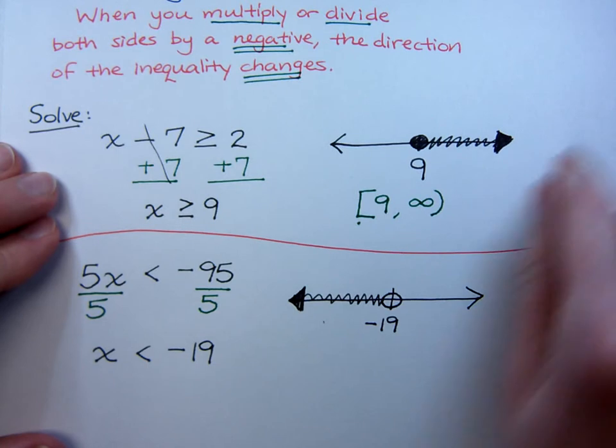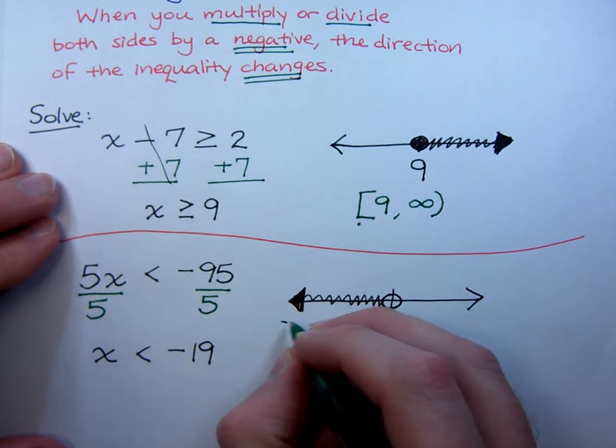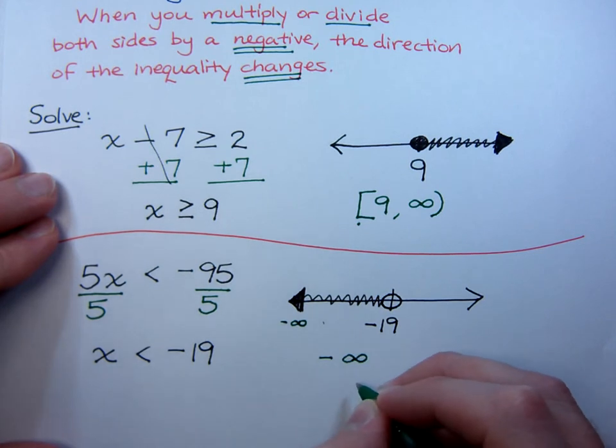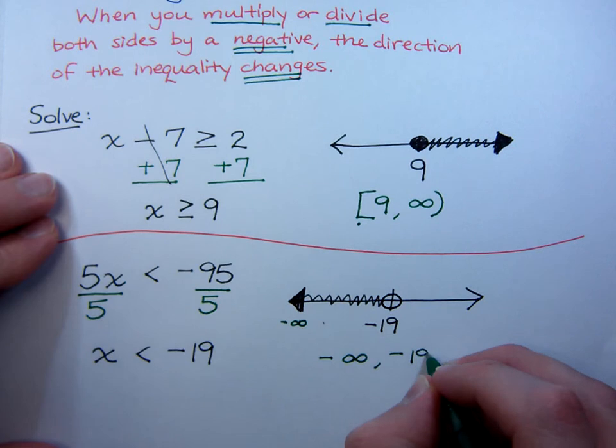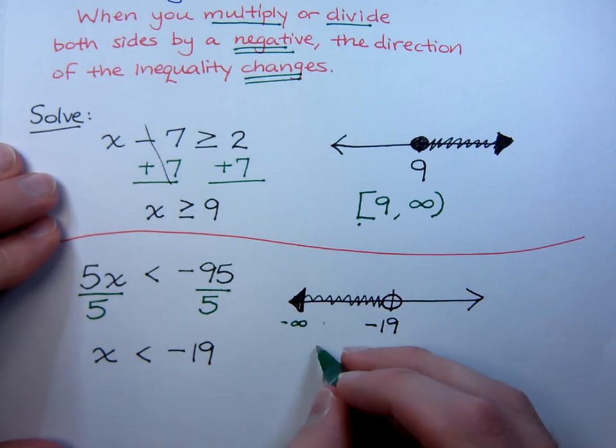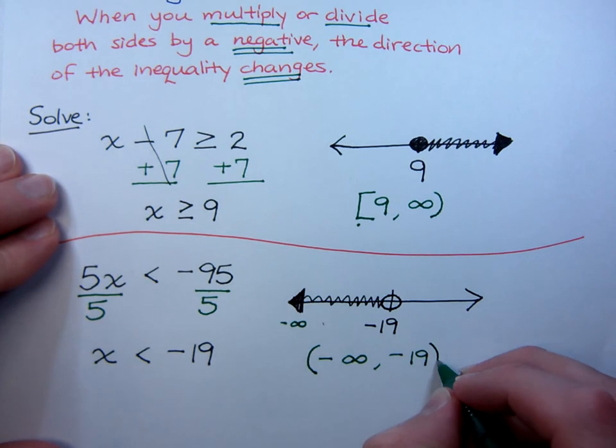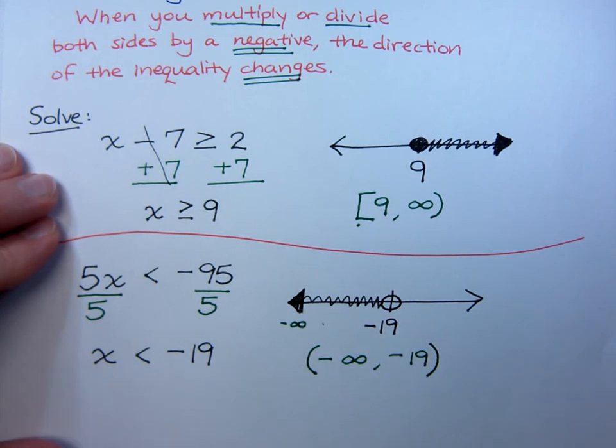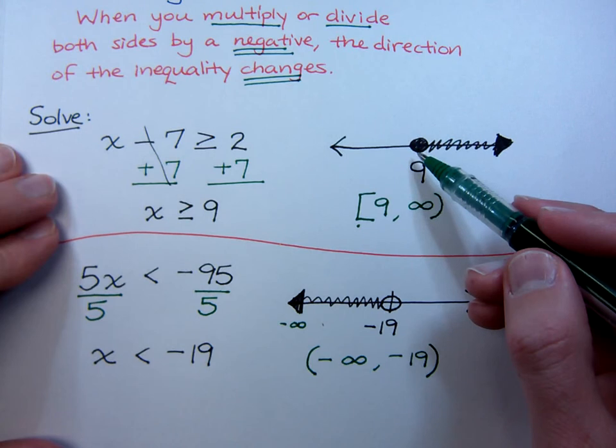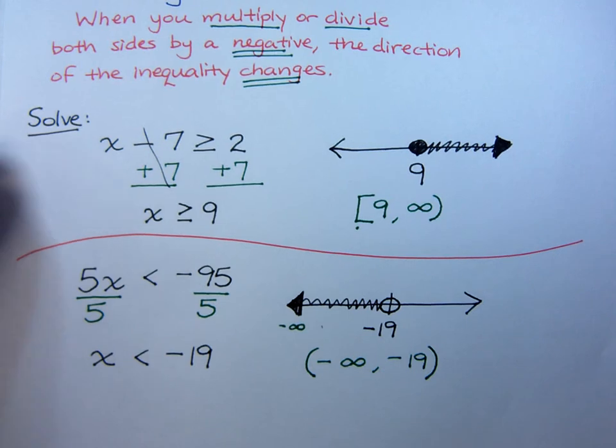So, everything to the left of this guy is going to be a solution. Now, we've got to take this and express it using interval notation. Always from left to right. We remember on the far left, this is negative infinity. So, we're coming from negative infinity to negative 19. Now, always put parentheses on infinity. And on negative 19, since this is an open circle, we will also put parentheses there. Remember, the only time that you're going to use a bracket is when you have a closed circle. That's the only time we're going to have a bracket. All right, let's try yet another example here.